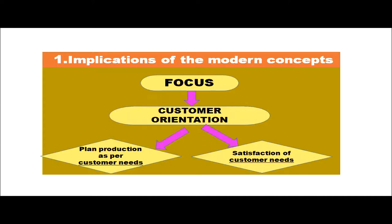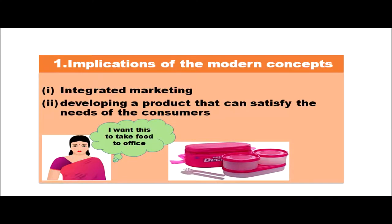Now let's see the implications of the modern concept. In the modern concept, the focus is on customer orientation — that is, planned production as per customer needs and then satisfaction of consumer needs. First, they identify what the customer needs, then produce products accordingly. The first implication is integrated marketing and developing a product that can satisfy the needs of consumers. Basically, the consumer is the king — first we find out what the consumer needs and then we develop the product accordingly.